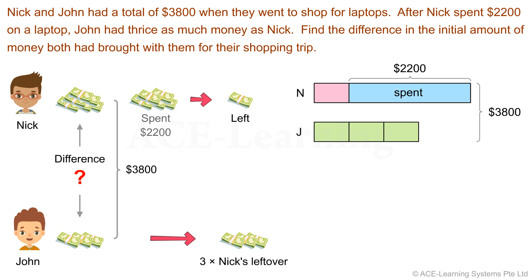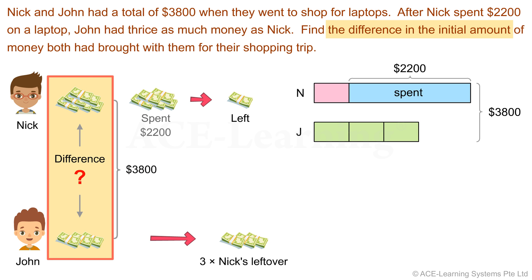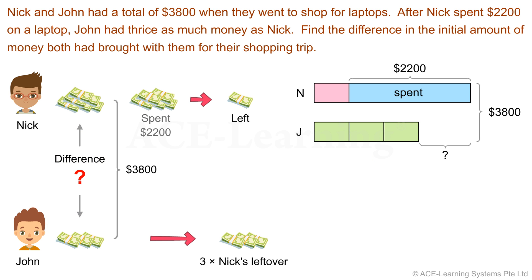Now what are we to find? We have to find the difference in the initial amounts. In a model, we indicate the quantity we have to find with a question mark. So where should our question mark go? This represents Nick's initial amount, and this represents John's initial amount. The difference in the initial amounts is here — this is where our question mark goes.